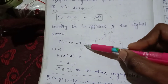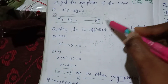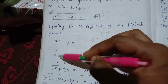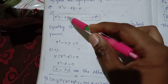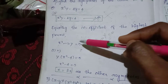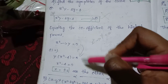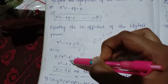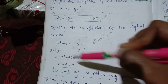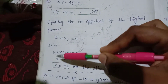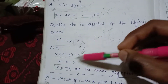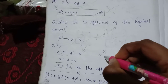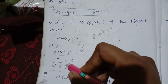x² - 4 is equal to 0. y into x² minus 4 is equal to 0. x² minus 4 is equal to 0, divided by anything is 0. So x² - 4 = 0, which gives x is equal to plus or minus 2.